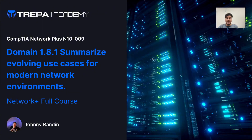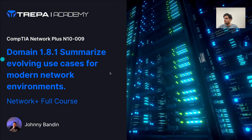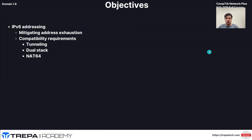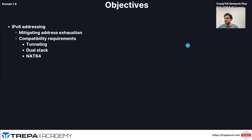Here are our objectives: we're going to cover SDN, SDWAN, VXLAN, and Zero Trust architecture. In the next video we'll finish off with Secure Access Service Edge (SASE), infrastructure as code, and IPv6 addressing.